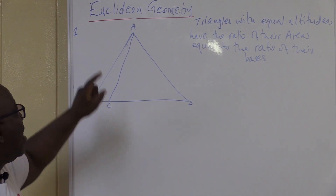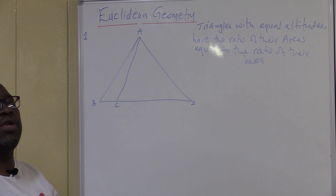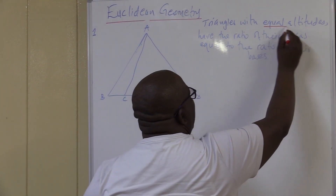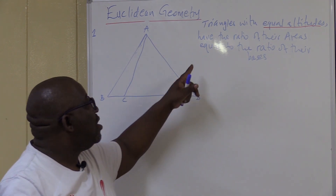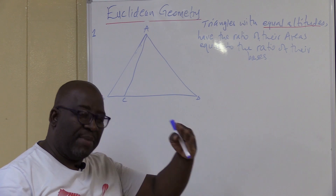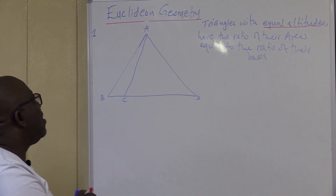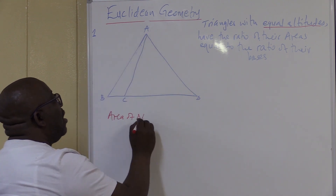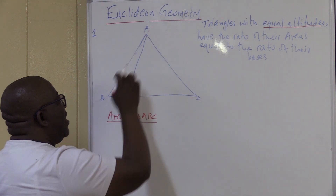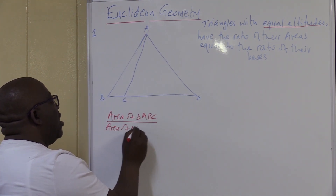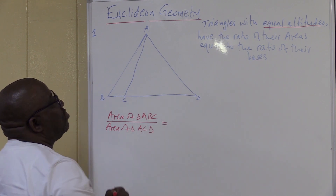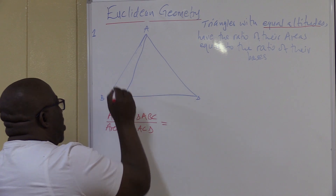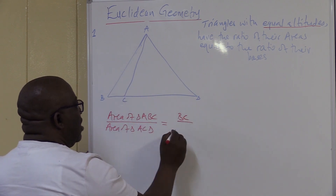Let's look at these two triangles: triangle ABC and triangle ACD. The theorem says triangles with equal altitudes have the ratio of their areas equal to the ratio of their bases. This means the area of triangle ABC over the area of triangle ACD equals BC over CD. This is what the theorem is saying.